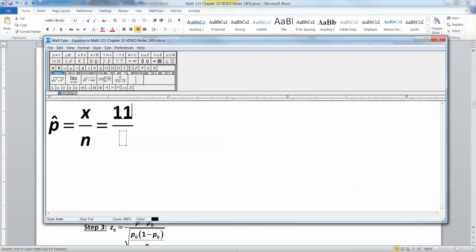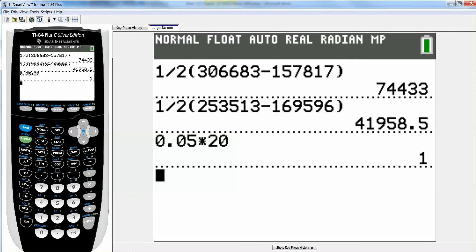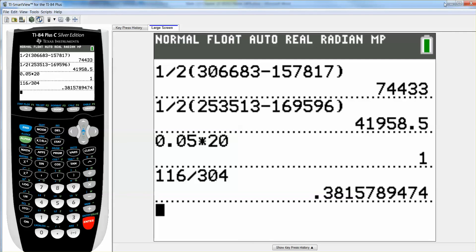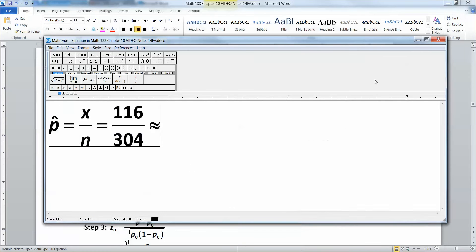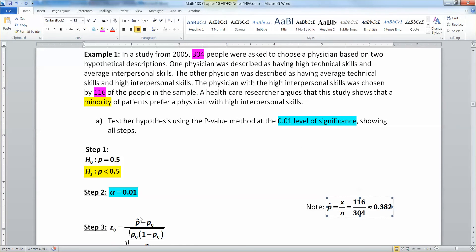So, we're going to say 116. So, it's 116, so it's 116 over 304, which is approximately, I'll grab a calculator. 0.3816. Alright. Or how about 0.382? How about that?